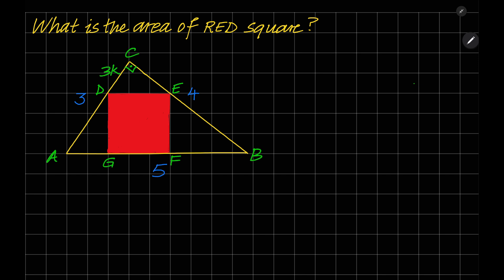CE is 4K, DE is 5K, AD is 3 minus 3K, and BE is 4 minus 4K.